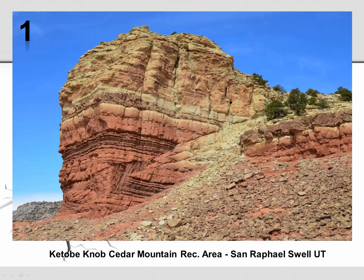Number one: Kotob Knob in the San Rafael Swell in Utah. First, we identify the fault plane, located here. Then we identify the layers that used to line up, here and here. Because of the overlap, this must have formed from compression or convergent motion.